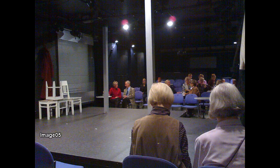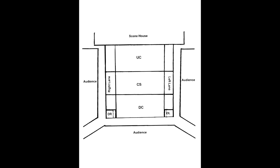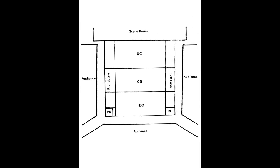The thrust arrangement creates different staging requirements than the proscenium arch. On the thrust space, the notion of creating stage pictures will not be effective. Where each audience member has a similar orientation to the proscenium arch stage, the arrangement of the thrust — with its audience on three different sides of the action — cannot create a consistent stage picture. If we put an actor in the down-center block, the condition that made it a strong position on the proscenium arch stage will not apply to the thrust stage.